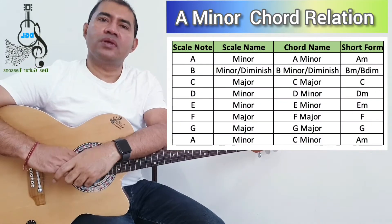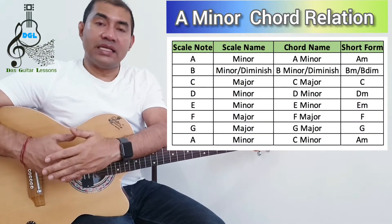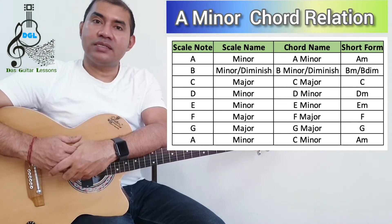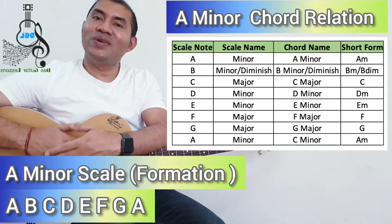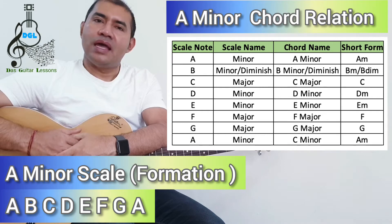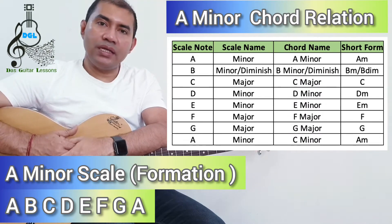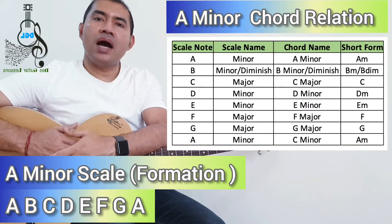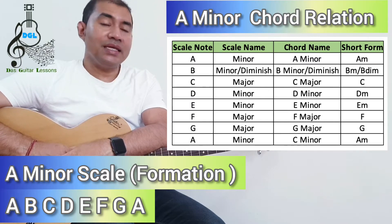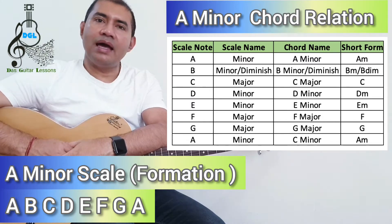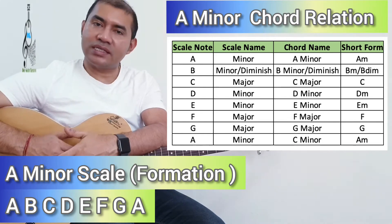Hi friends, today our lesson is A minor chord relation. A minor chord relation is related with A minor scale. A minor scale is a natural scale and related with C major scale.